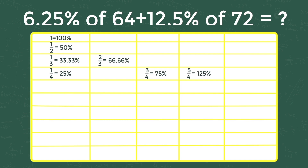Continuing the table: 1 by 5 is equal to 20 percent, 2 by 5 is equal to 40 percent, 1 by 6 is equal to 16.66 percent, 1 by 7 is equal to 14.28 percent.